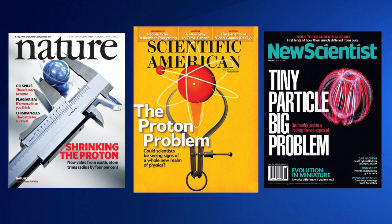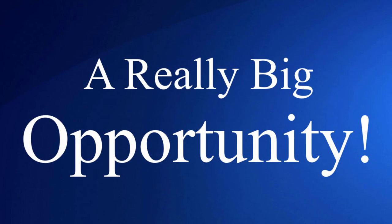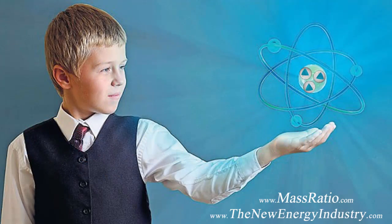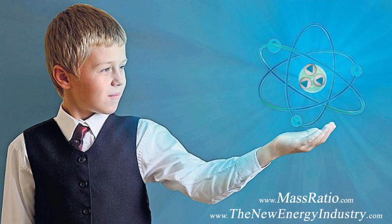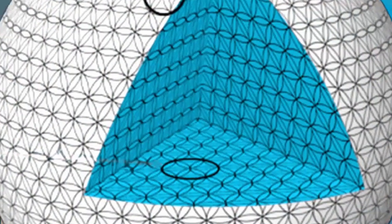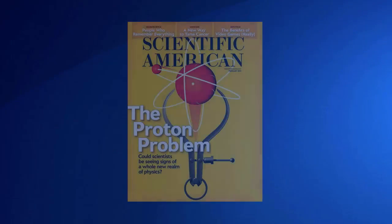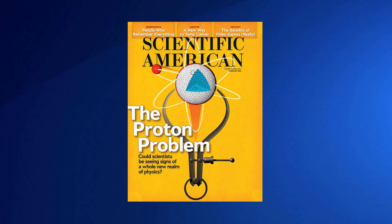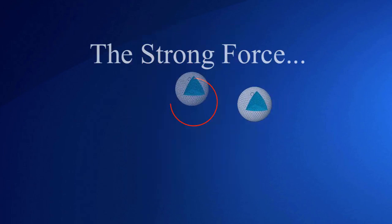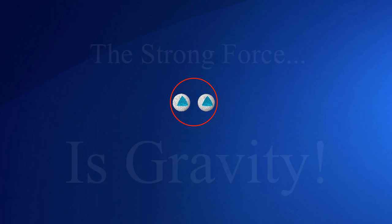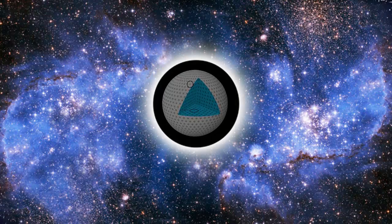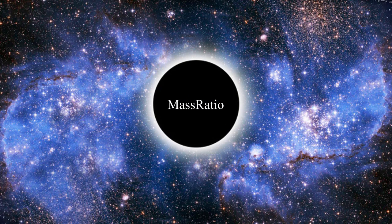This proton problem is actually a really big opportunity. So to all you young physicists out there who want to help create the future, the best place I know of to start is with the new mass ratio. Because it's currently the only physics model on the planet today that is able to perfectly predict the new proton radius, show us that the strong force is actually gravity, and it solves Einstein's field equations. You can't beat that.